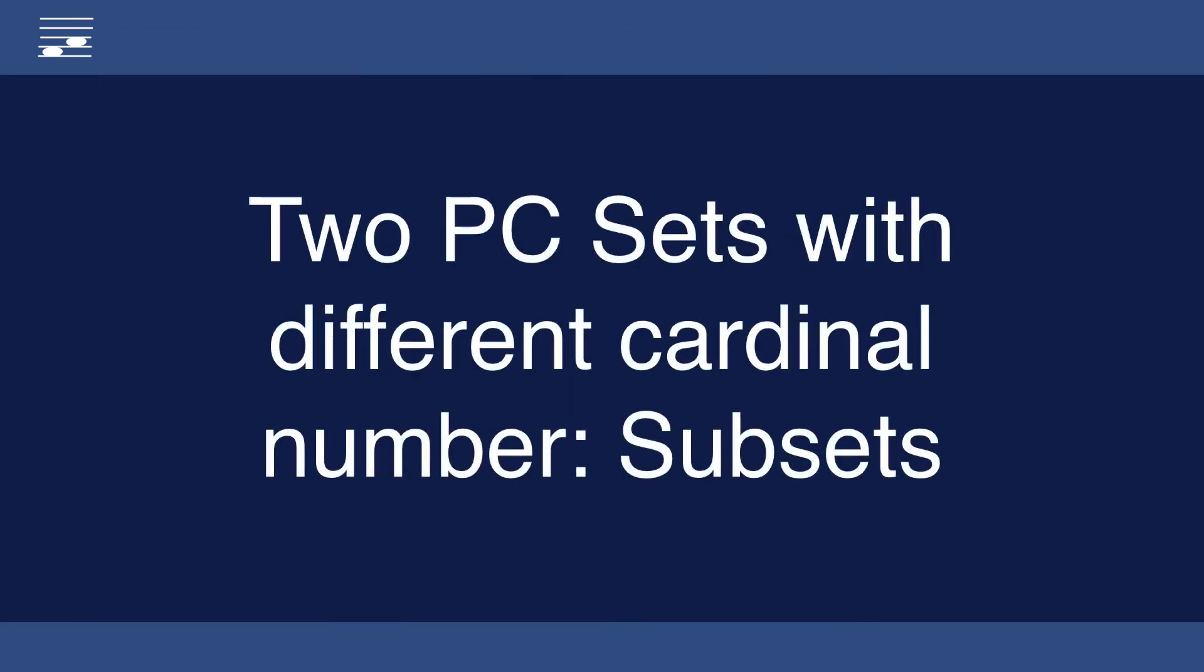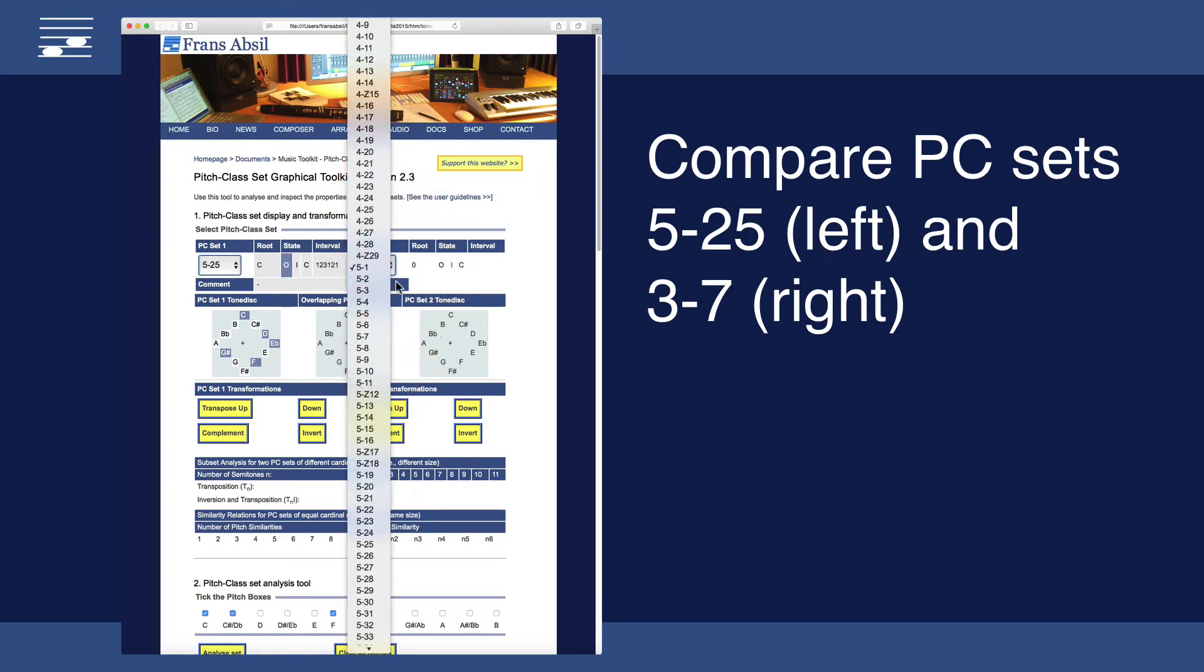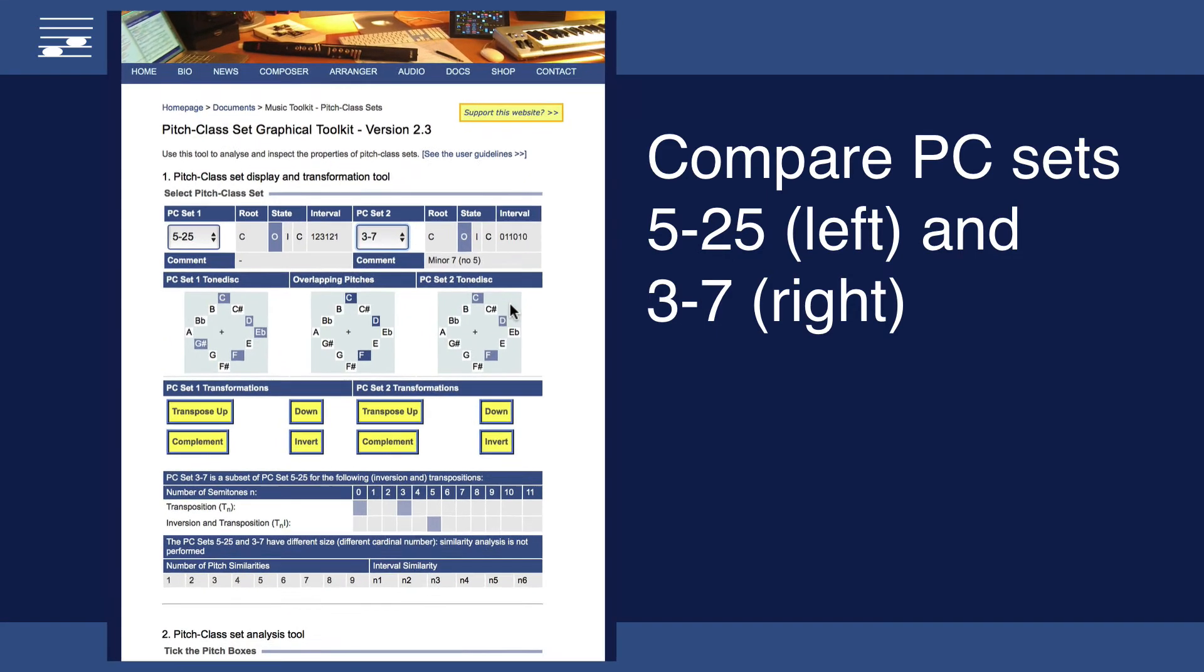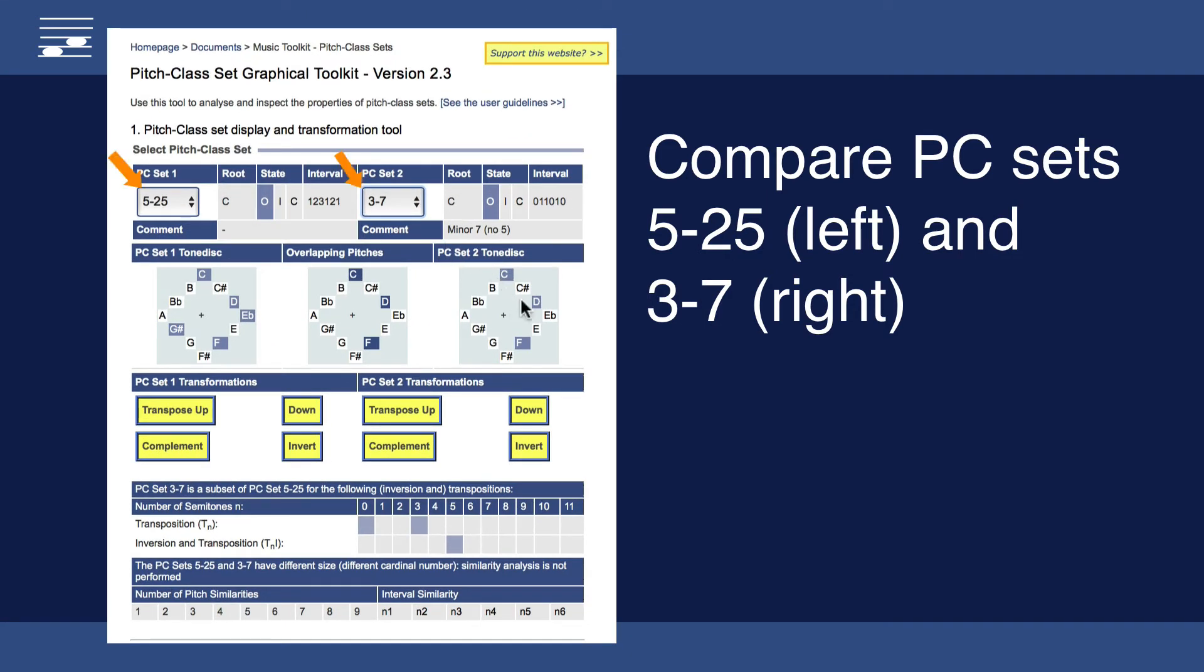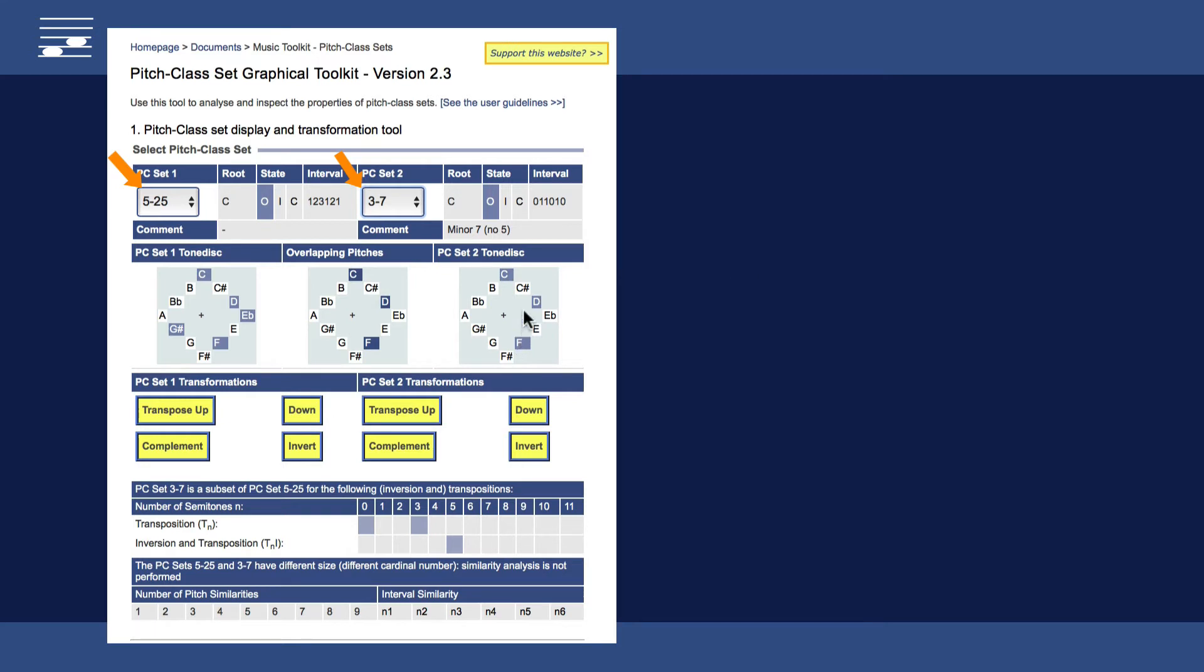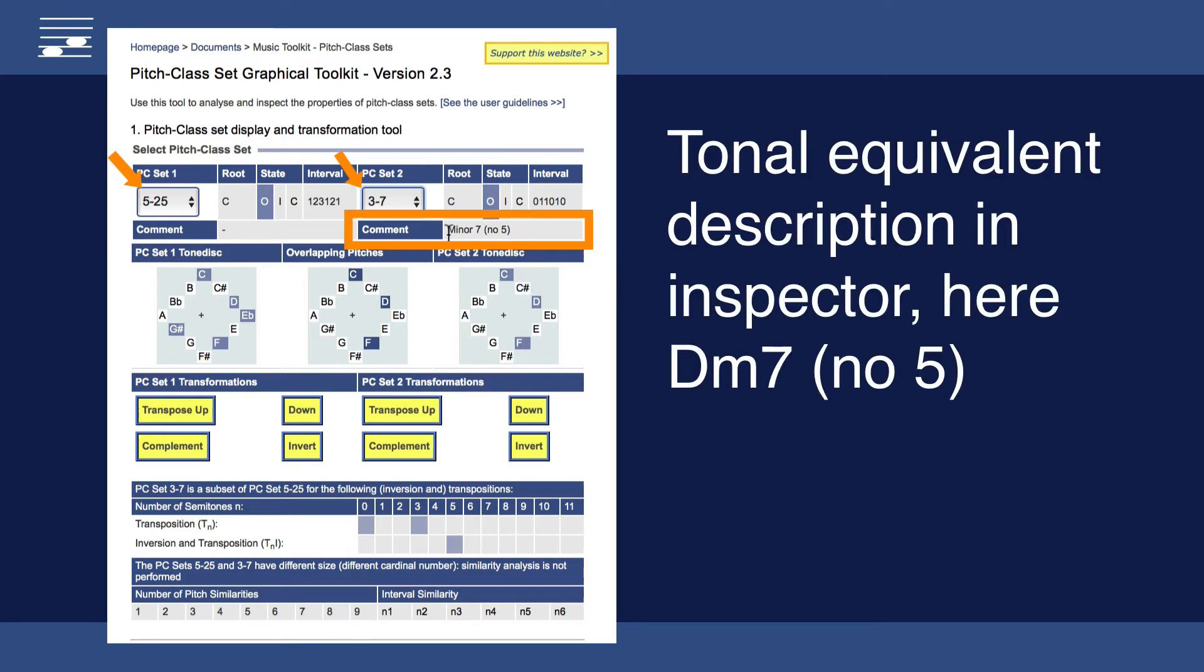For sets with different cardinal numbers, the smaller may be a subset of the larger. This I will demonstrate with set 5-25 in the left and 3-7 in the right inspector. By the way, for some sets there will be a tonal equivalent description such as the D-7 chord with 5 omitted shown here.